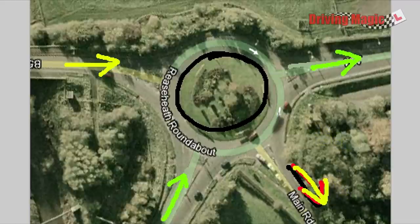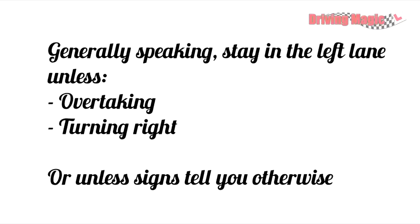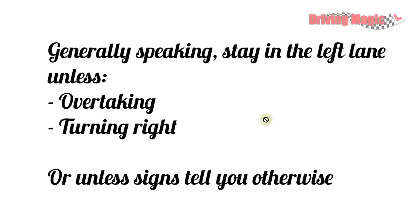Now the rules for roundabouts — and any driving in fact, generally speaking — stay in the left lane, because we drive on the left in England, unless you're overtaking, then you'd use the right lane, or turning right, then you're going to use the right lane, or unless the signs tell you otherwise. Sometimes you'll approach a roundabout and you'll have an arrow in the left lane saying left turn only, and the right lane will have an arrow saying straight ahead. In that case, obey the arrows, but otherwise default to these normal rules.